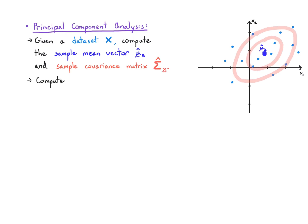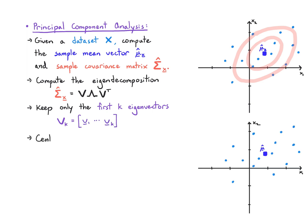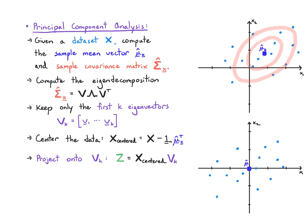I'm going to compute the sample covariance matrix and visualize that using a contour plot. Then I'm going to compute the eigendecomposition for this sample covariance matrix, so I'm going to get some eigenvectors and eigenvalues, and I'm only going to keep the first k eigenvectors. I'm going to center the data first, move it to the origin.